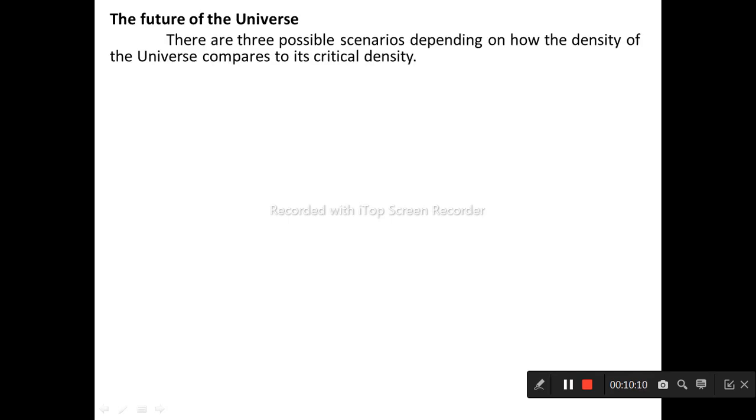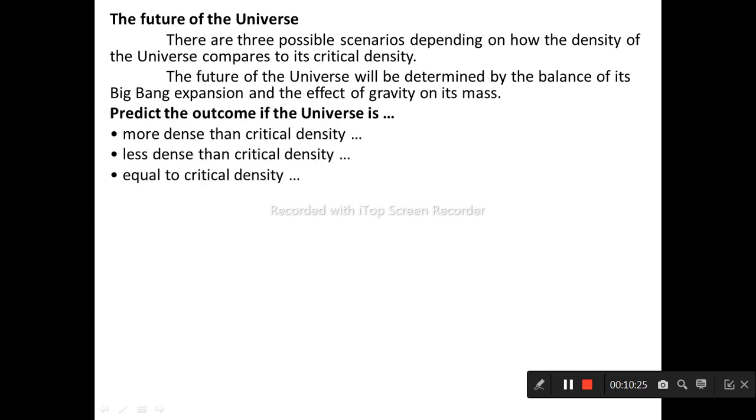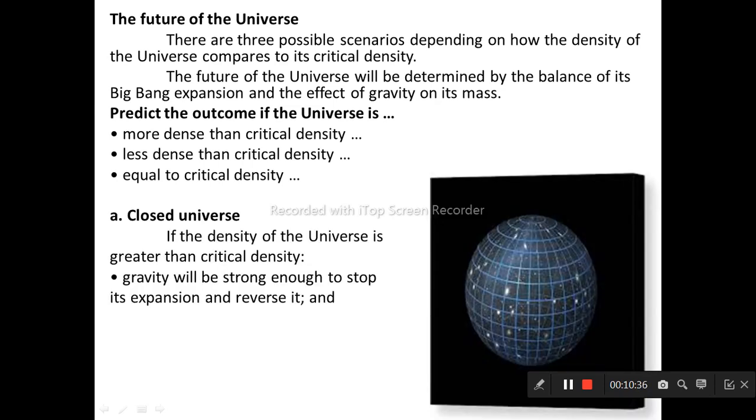There are three possible scenarios depending on how the density of universe compares to its critical density. The future of the universe will be determined by the balance of its Big Bang expansion and the effect of gravity on its mass. If the density of the universe is greater than critical density, gravity will be strong enough to stop its expansion and reverse it, and the universe may be thought of as closed, like the surface of a sphere.